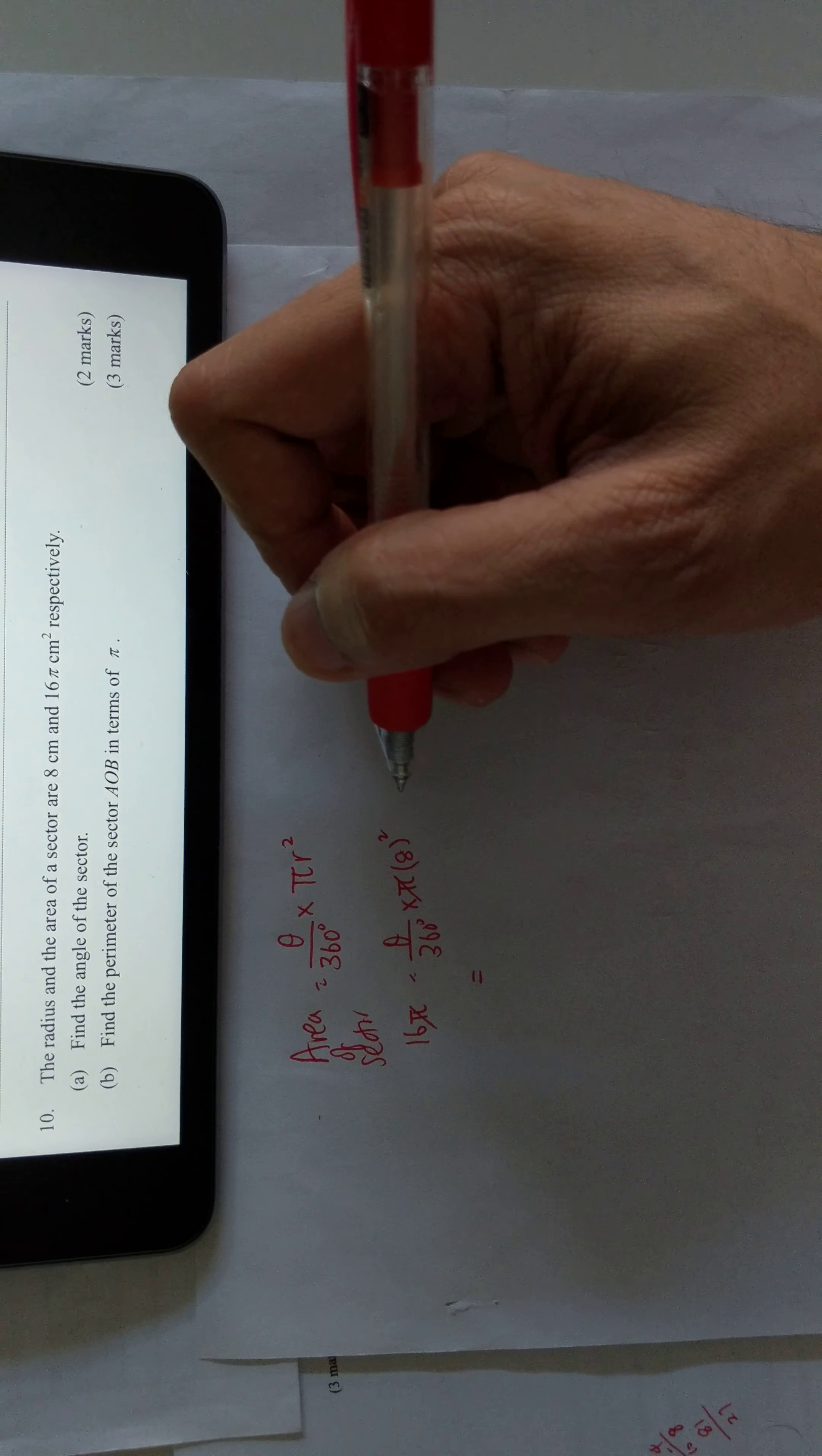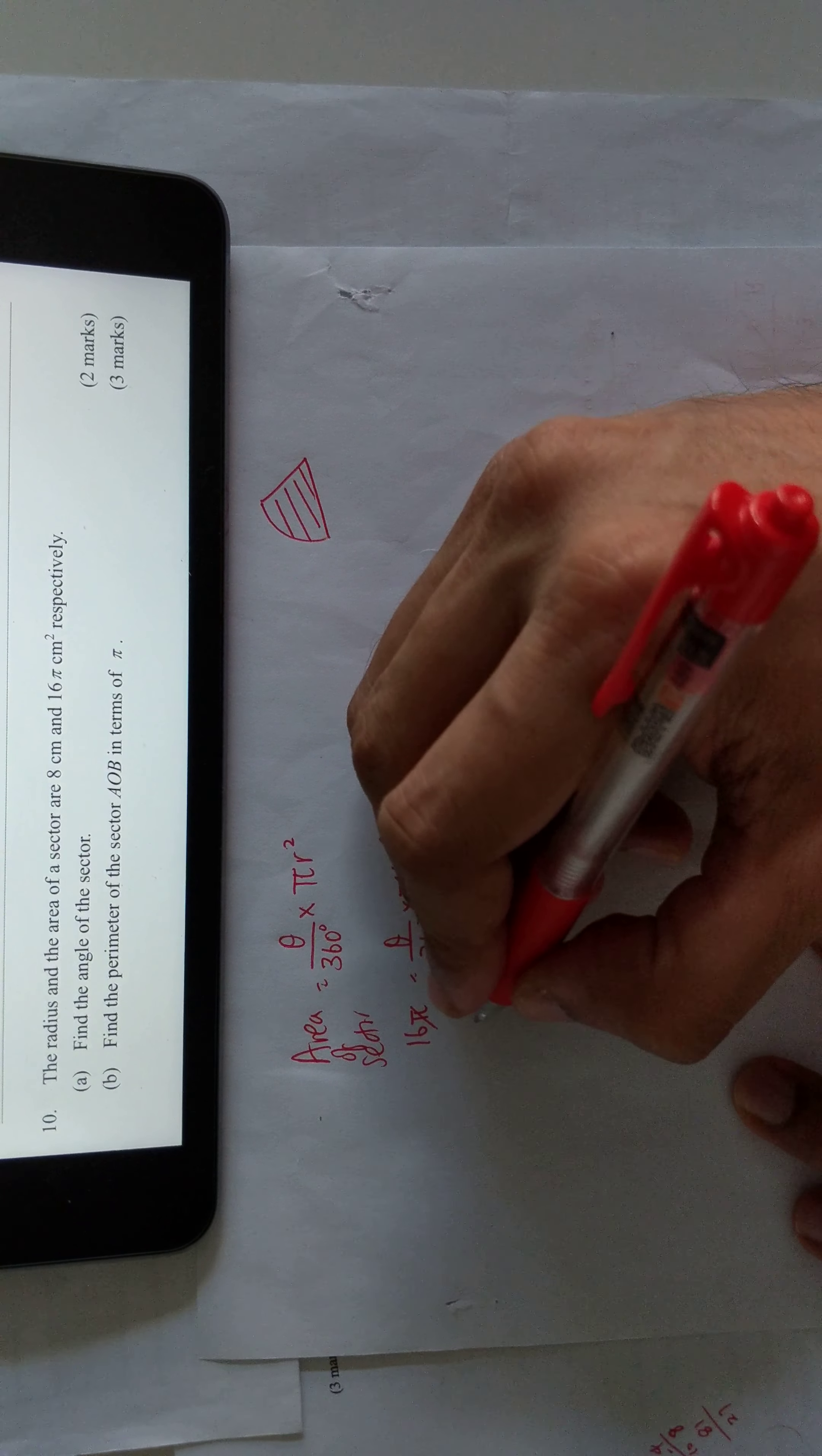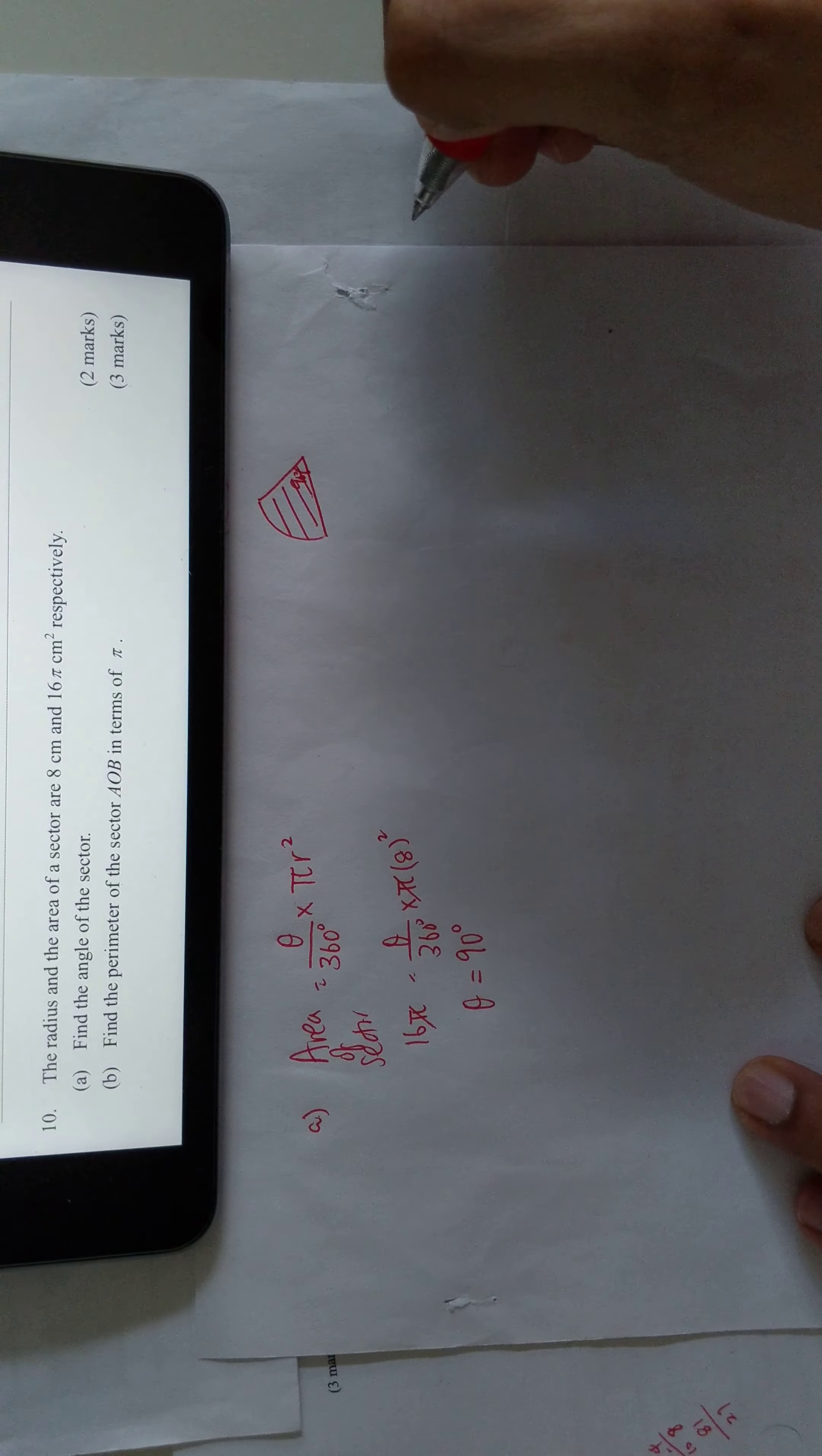If you do the calculation, divide by 64 and multiply by 360, you should get theta as 90 degrees. That is the angle of the sector.